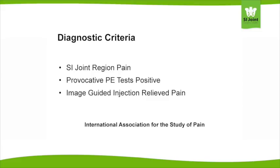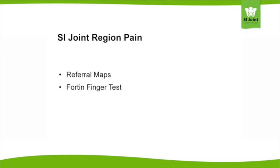Speaking of detective work, these are the three main elements of our diagnostic workup. If a patient presents with primary buttock pain, or they point to the joint as the source of their pain, consider SIJ dysfunction.